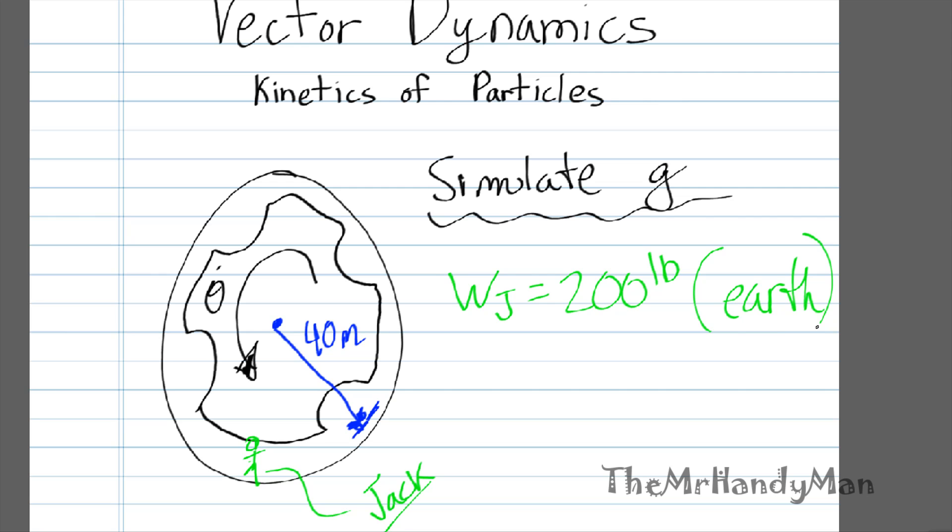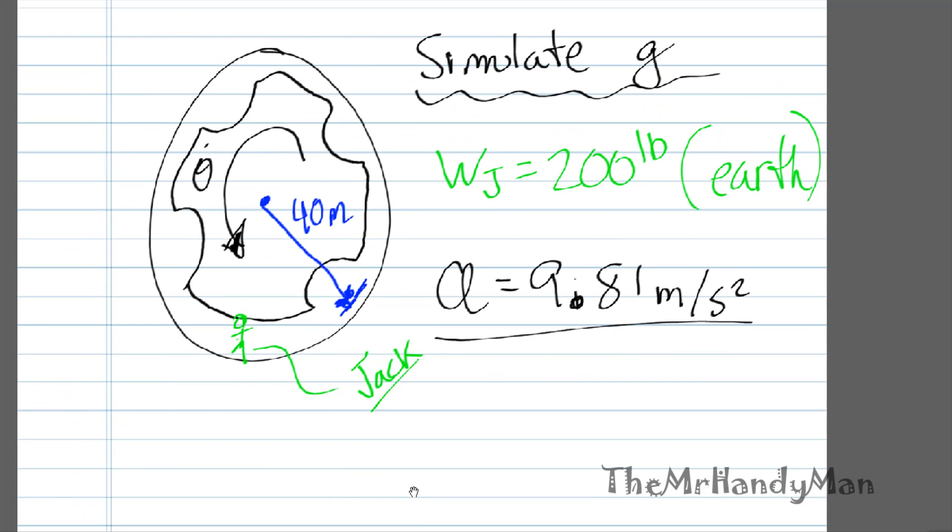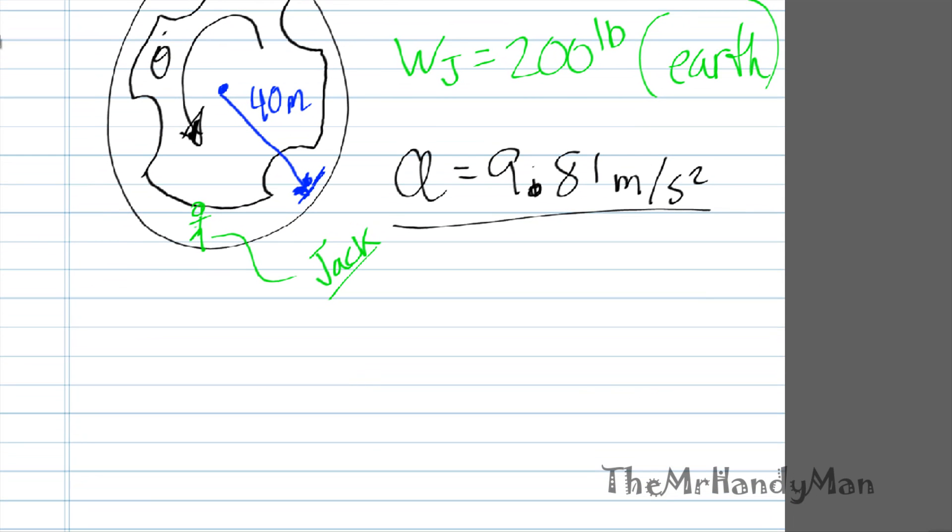What we want to do is we want to simulate Earth's acceleration. Doing that, we know that the acceleration on Earth is 9.81 meters a second squared. Well, rotational acceleration from kinematics we know is acceleration equals v squared over rho, or r theta dot squared, both the same thing.